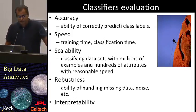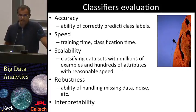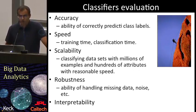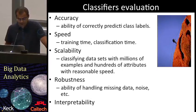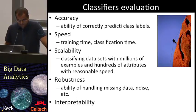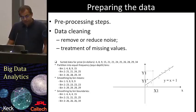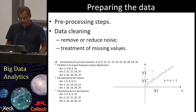Now let's see in more detail how to evaluate a classifier. Accuracy is related to the ability to make correct predictions. Speed refers to the computational cost in both building the model — the training time — and doing the actual classification of new data — the classification time. Robustness is the ability of the classifier to make correct predictions also in the presence of noisy or missing values. Scalability is the ability to handle large amounts of data. Let's briefly see some preprocessing steps that may be applied to improve accuracy, efficiency, and scalability of classifiers.